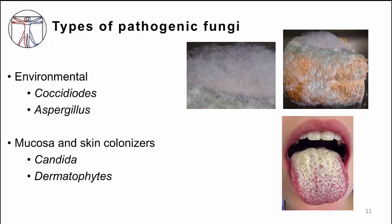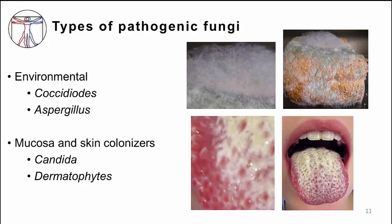In contrast to environmental fungi, there are fungi that colonize us — our mucosa and our skin — and they live on us without causing disease. They are part of our microbiota. A good example is Candida, which colonizes our mucosal surfaces. Here's a picture of Candida colonizing the oral mucosa of the tongue — this is called thrush. In the close-up, you can see that these plaques of Candida biofilm are tightly attaching to the mucosa; you can't scrape this off. Dermatophytes are another group of fungi that colonize us, causing superficial skin, nail, and hair infections. They are well adapted to living in keratin tissues and live in the very superficial layers of skin without invading deeper tissue.